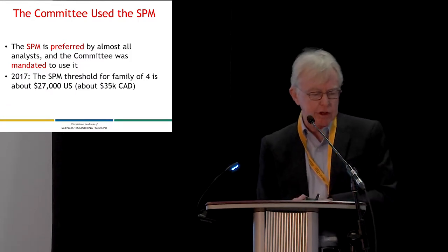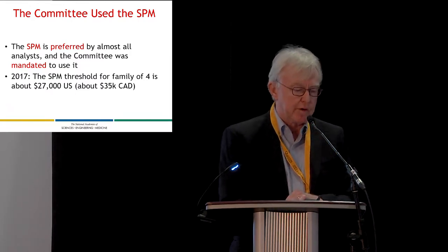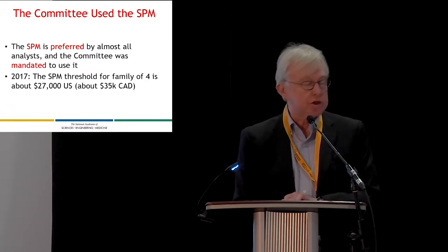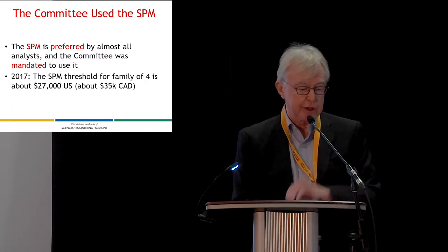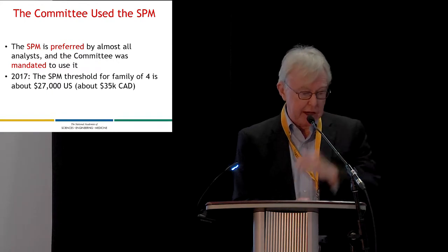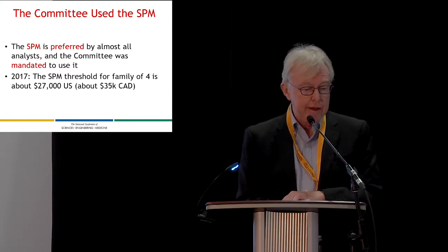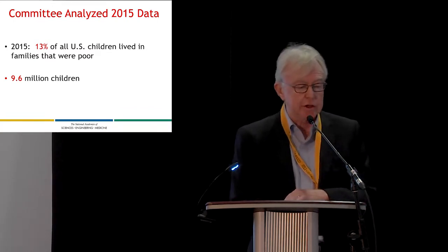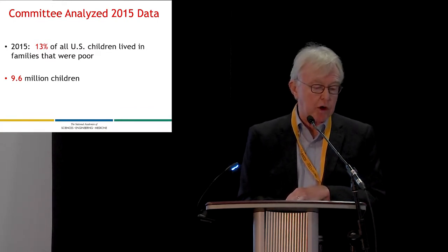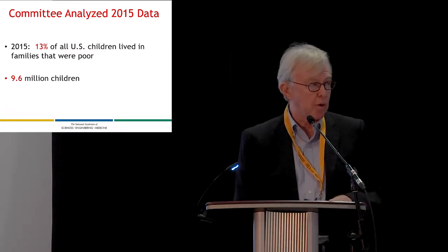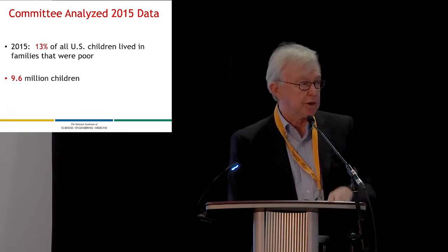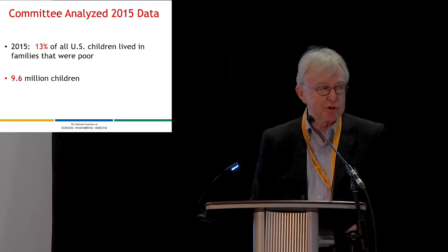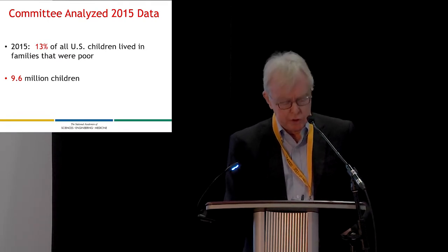The threshold for a family of four under the SPM measure in 2017 was about $27,000 U.S. In 2015, 13% of all U.S. children lived in families that were poor — about 9.6 million children. In the committee's view and in a lot of people's view, that's way too high, and we want to reduce that.